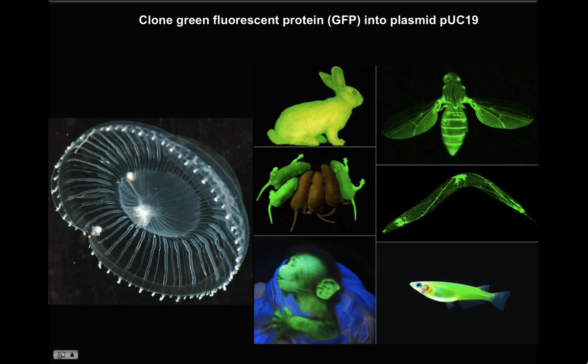Let's say you want to clone green fluorescent protein, or GFP, into the cloning plasmid PUC19. GFP is a protein isolated from jellyfish that gives out bright green fluorescence when exposed to light in the blue to ultraviolet range. GFP is extensively used in fluorescence microscopy, in making transgenic animals, and also sometimes in fine arts.